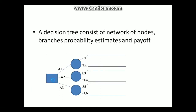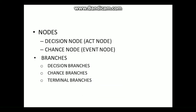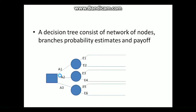The decision node is represented by a box, and it represents the decision maker. The chance node is represented by a circle. A chance node represents an event — something we do not control. There is one decision node and three chance nodes in this example.